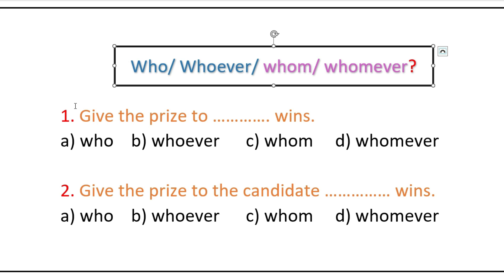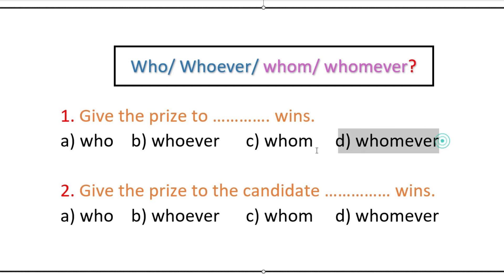We know there is a hidden subject at the beginning — 'you': 'You give the price to ___ wins.' In front of the verb 'wins,' we need to select a relative pronoun. Since this verb requires a subject, we cannot use any objective form. Whom and whomever are objective cases, so they are ruled out.